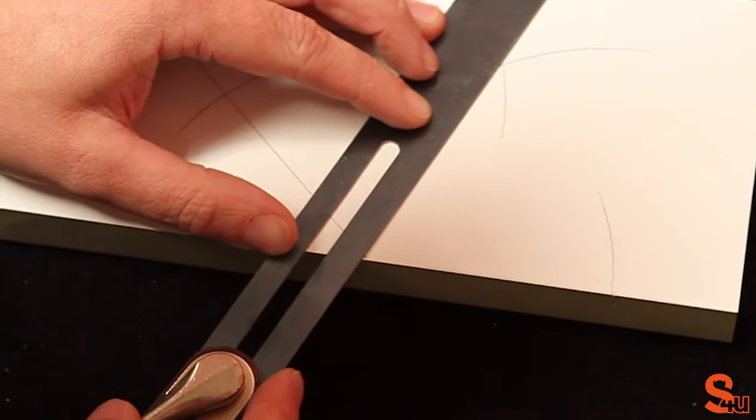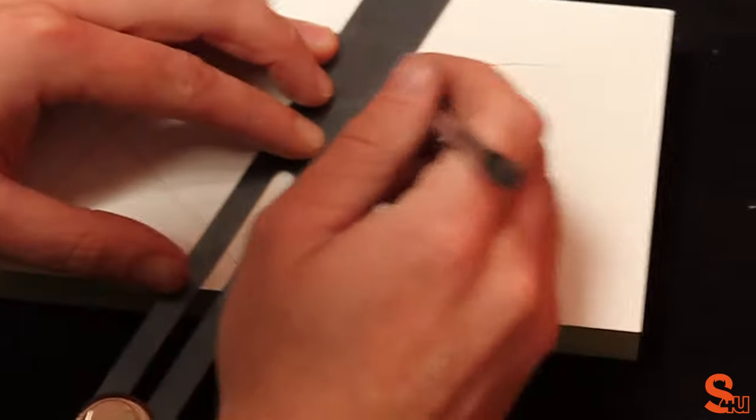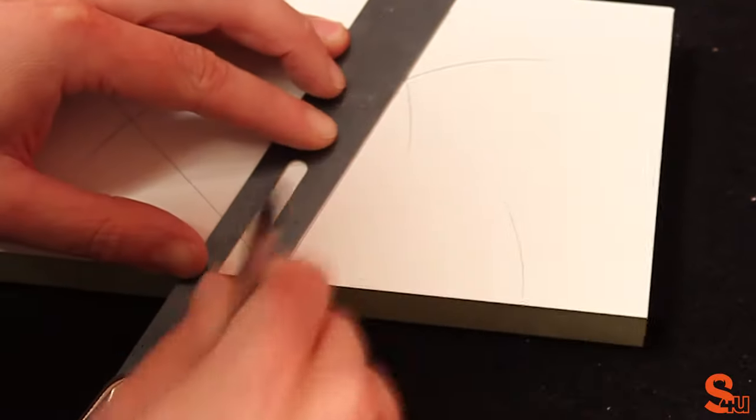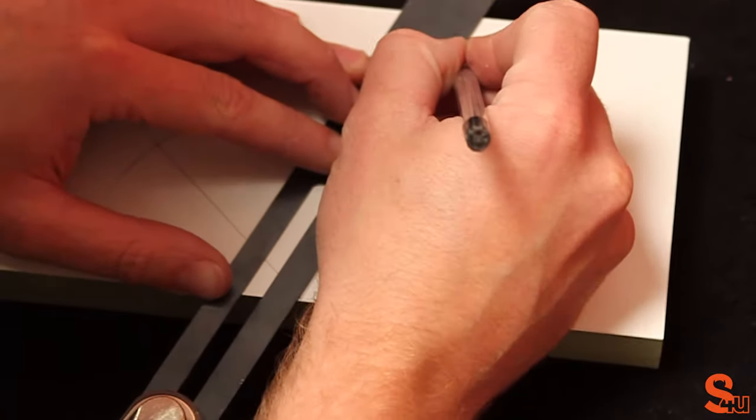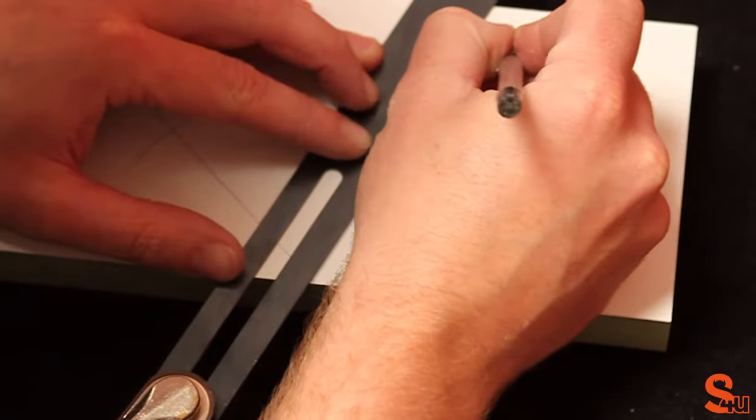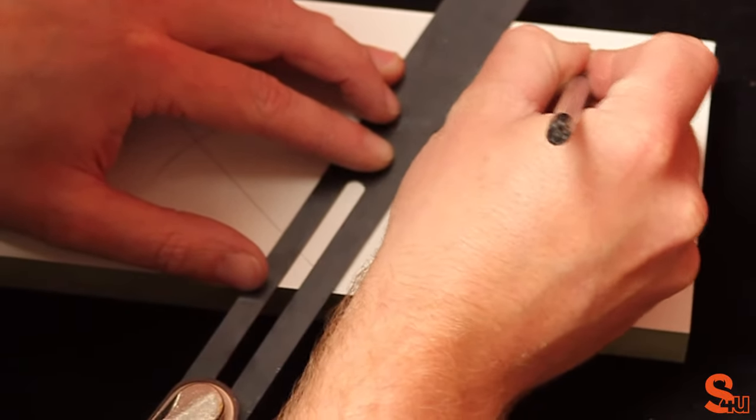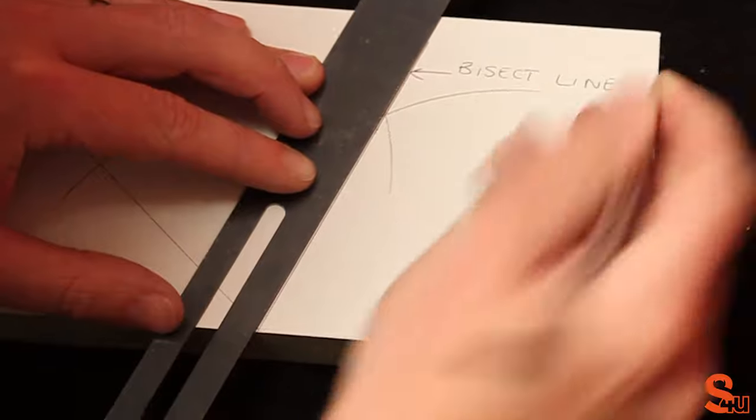You're just going to put a straight line down the middle to the bottom of where the sliding bevel is. And this is your bisect line.